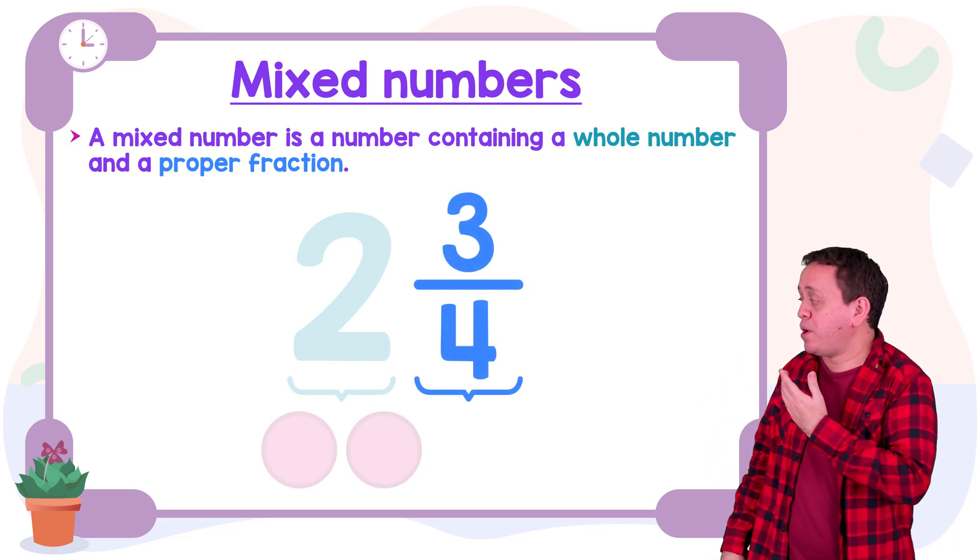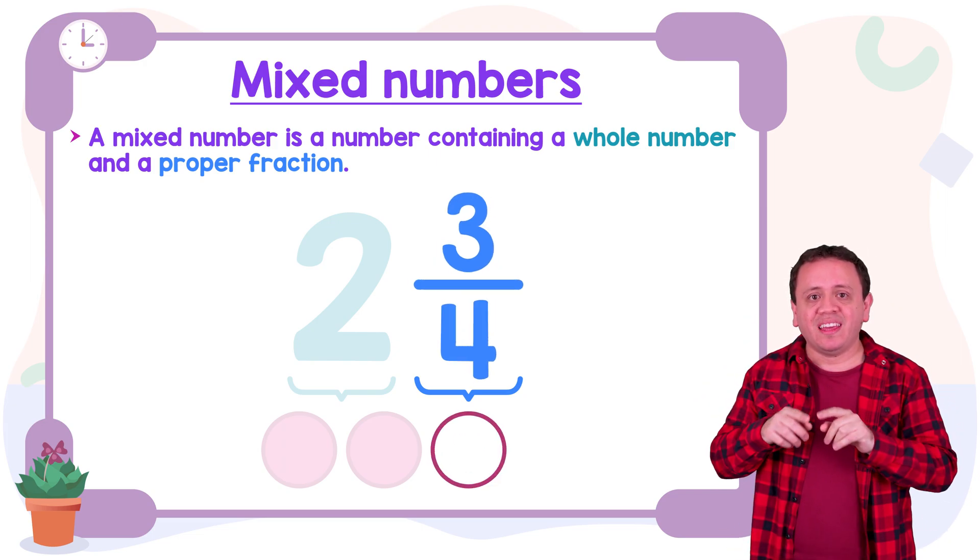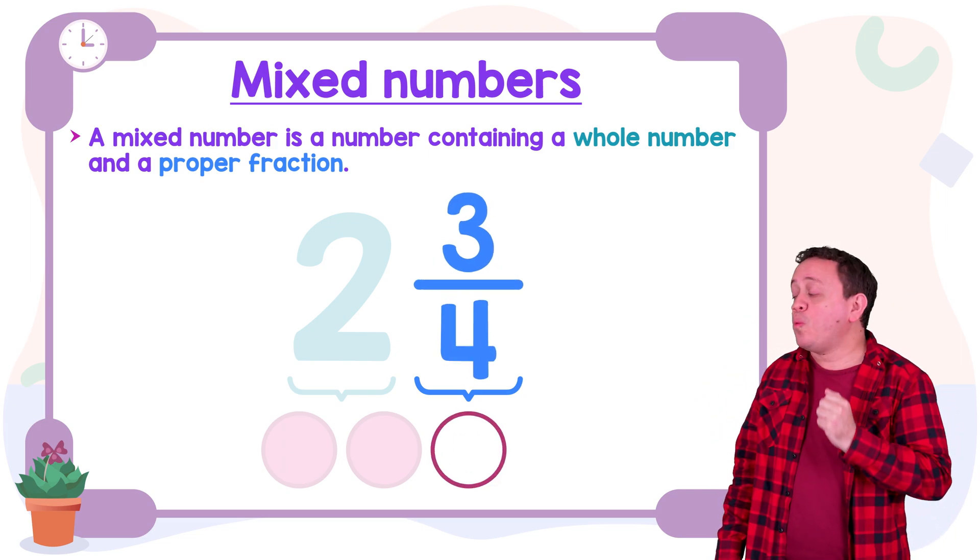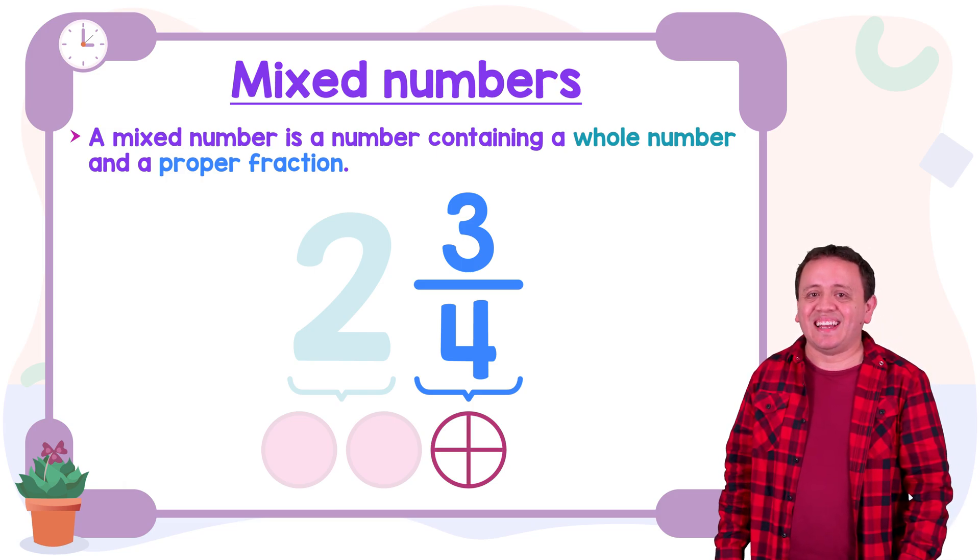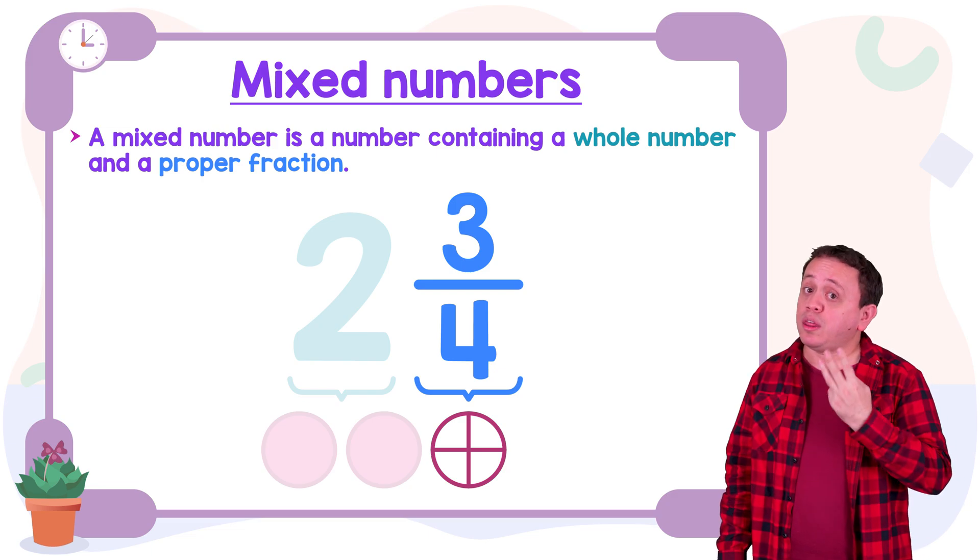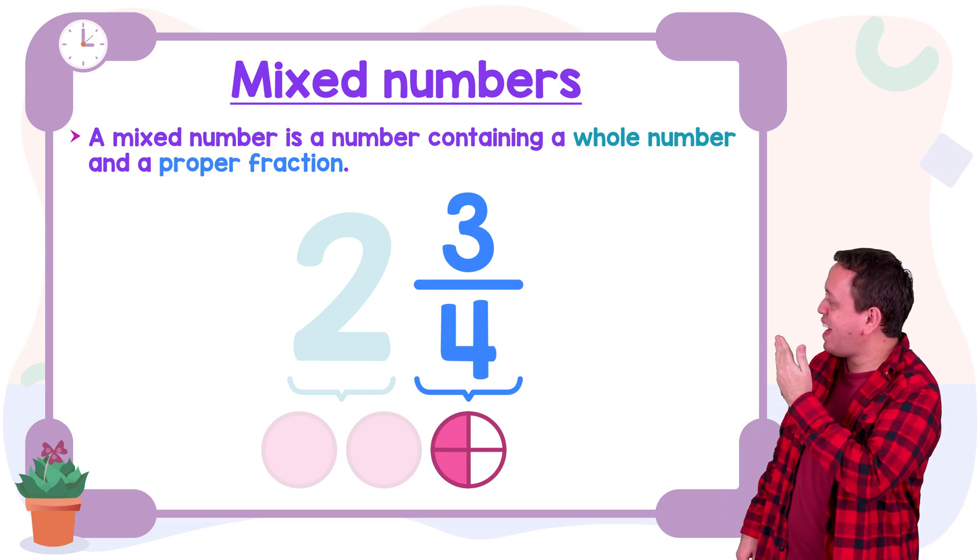Finally, we're going to represent the proper fraction 3 fourths, so we're going to draw an identical circle. Since the denominator is 4, we're going to divide our circle into 4 equal parts. Since the numerator is 3, we're going to shade 3 equal parts. Are you ready? 1, 2, and 3.